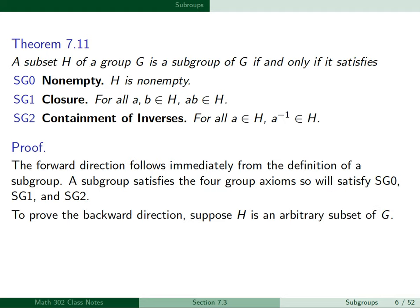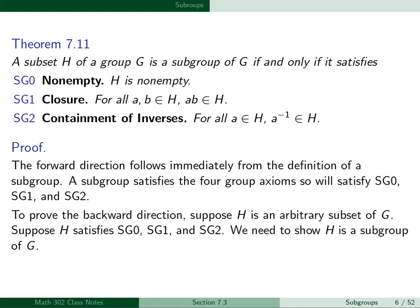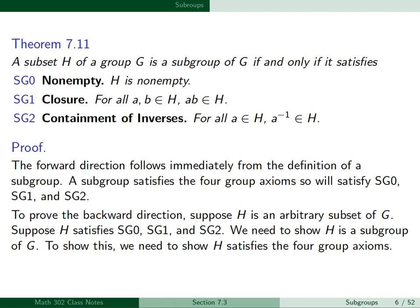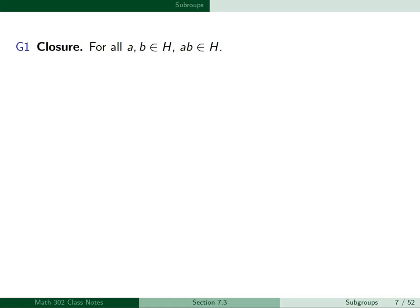To prove this biconditional, the forward direction follows immediately from the definition of a subgroup — a subgroup satisfies the four group axioms, so it satisfies SG0, SG1, and SG2. To prove the backward direction, we suppose H is an arbitrary subset of G satisfying SG0, SG1, and SG2, and need to show H is a subgroup. G1 is identical to SG1, so since H satisfies SG1, H satisfies G1.